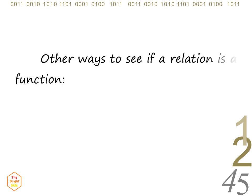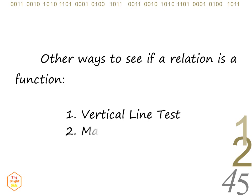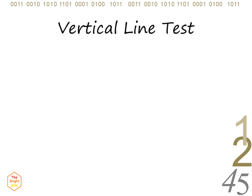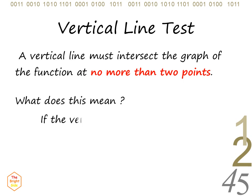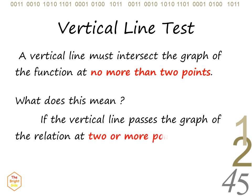There are other ways to see if a relation is a function. We can use the vertical line test. The other method is by using mappings. In the vertical line test, a vertical line must intersect the graph of the function at no more than one point. If the vertical line passes the graph of the relation at two or more points, it fails, and that relation is not a function.